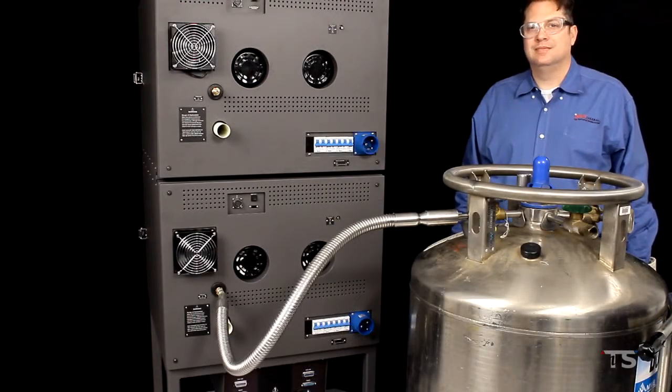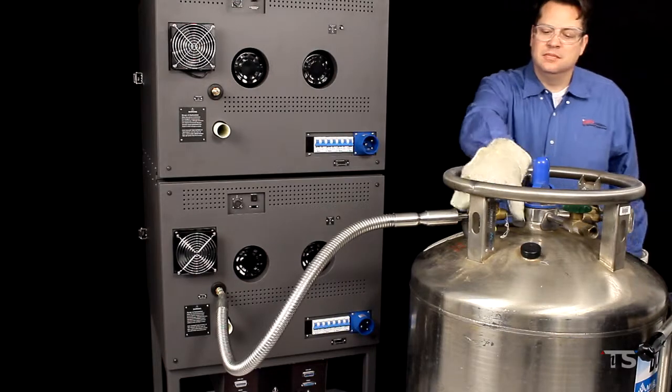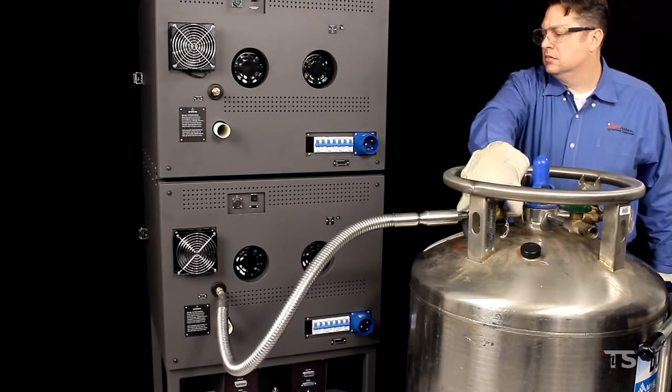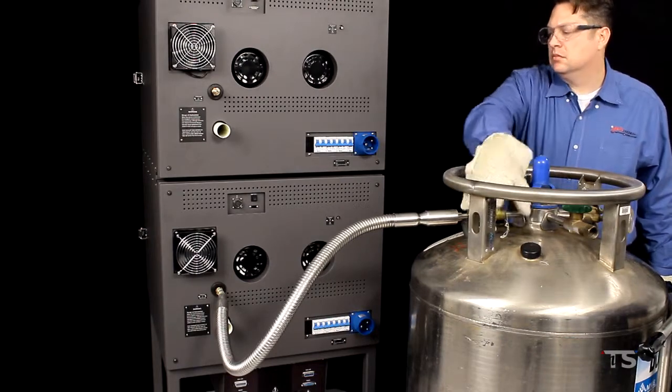Now that your wrenches are adjusted to fit the cryo inlet connections, open the blue valve on the Dewar. Liquid nitrogen will begin flowing from the Dewar to your thermal chamber.